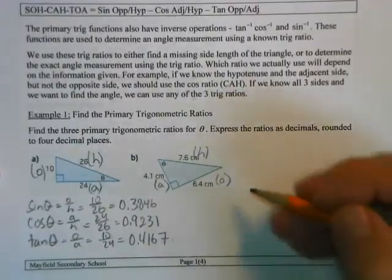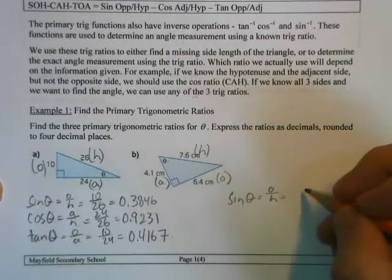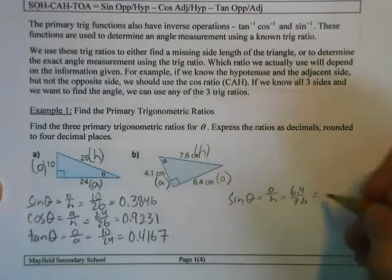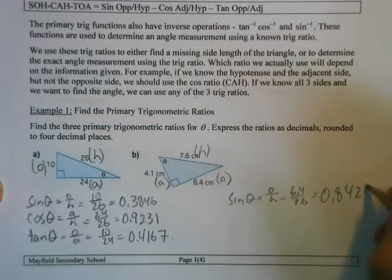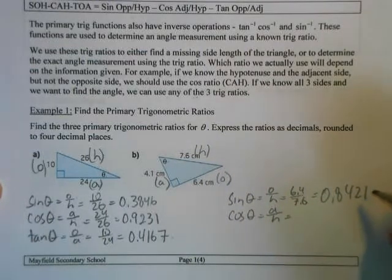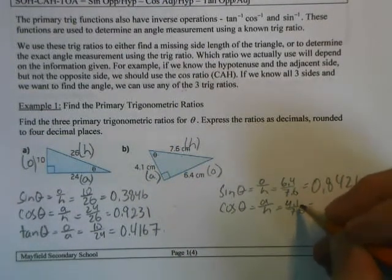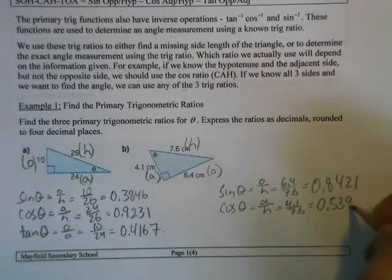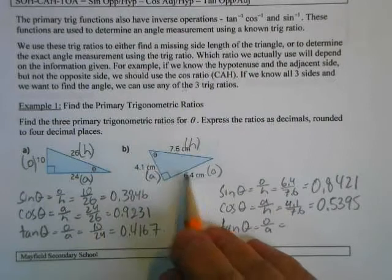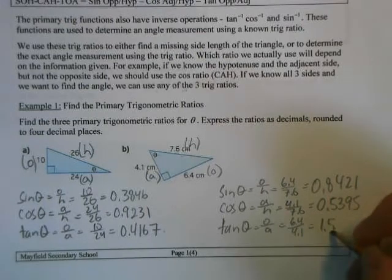For the second triangle: sin(θ) = O/H = 6.4 over 7.6, which is 0.8421. Cosine is adjacent over hypotenuse: 4.1 over 7.6, which is 0.5395. And tan(θ) = 6.4 over 4.1, which is 1.5609 — and as you can see, this number is bigger than 1.